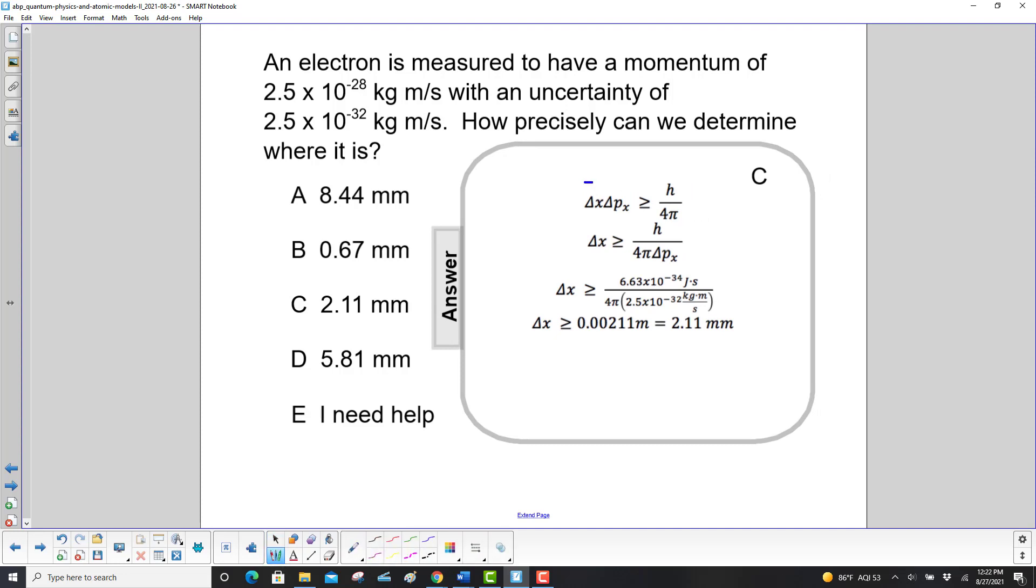We start with Heisenberg's uncertainty principle. This time we want to find the uncertainty of position, which is delta x, so we divide both sides by the uncertainty in the momentum.